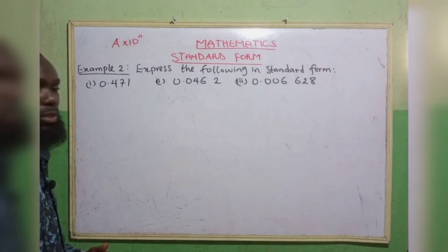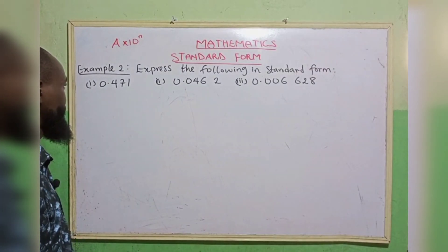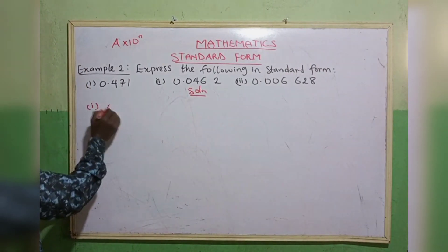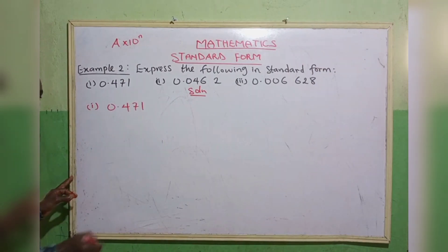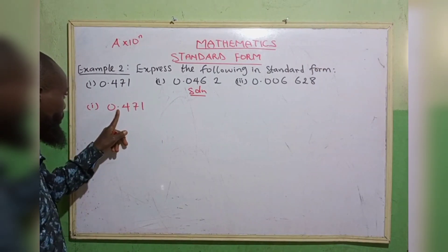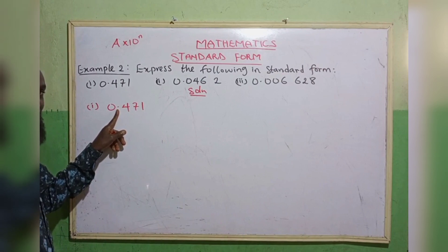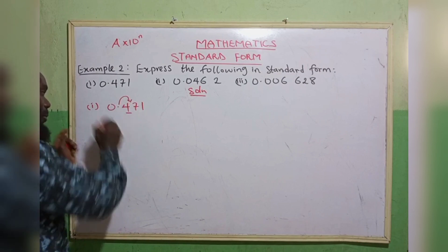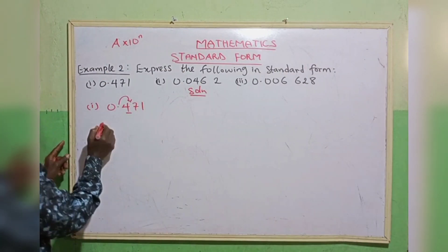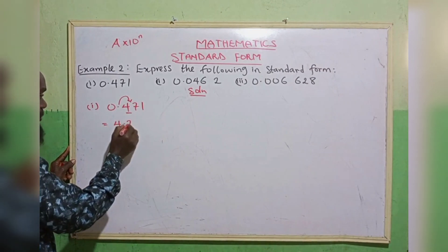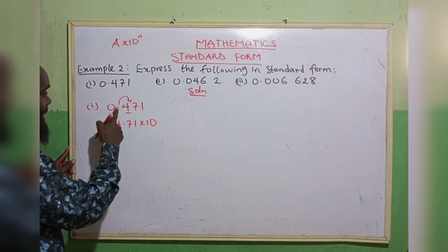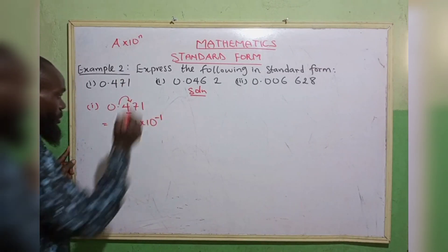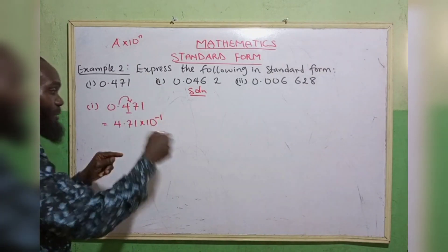Example 2: express the following in standard form. The first one is 0.471. Don't forget, we are going to move this decimal point to after the first non-zero digit. The first digit here is 4. Since we are moving backward, as I explained, it's going to be negative. That is 4.71 multiplied by 10 raised to the power — we move 1 time to the back, so that is minus 1.